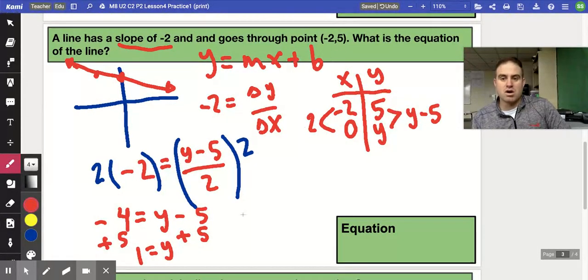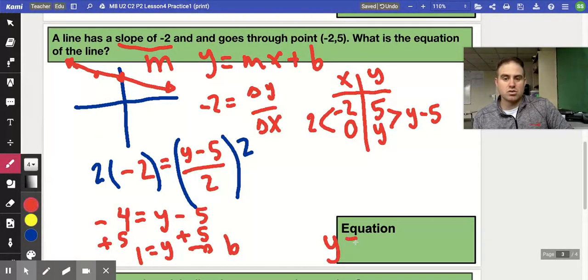So therefore, that is my b value. This up here is my m value for slope negative 2. So my equation is y equals negative 2x plus 1.